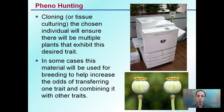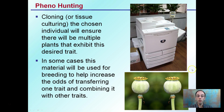So phenohunting, or cloning, or tissue culture could also be used. Once we have the chosen individual, this will ensure that multiple plants exhibit that desired trait. Once we phenohunt and find the one we're really interested in, we then clone that particular one — just like a copy machine, producing duplicates. In some cases, this material can also be used for breeding to help increase the odds of transferring one trait and combining it with another.